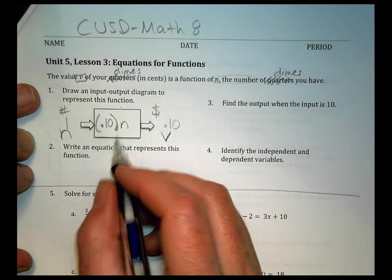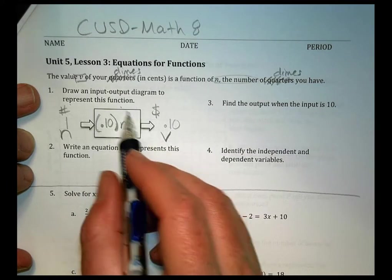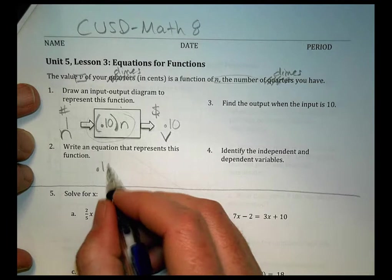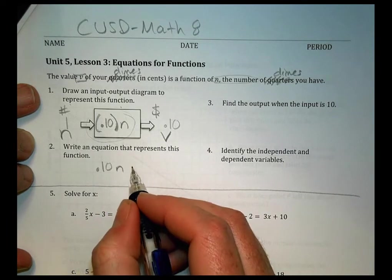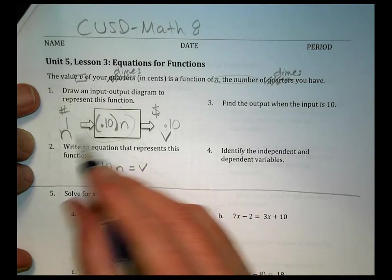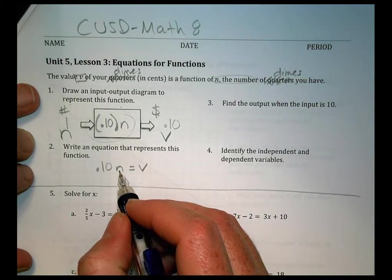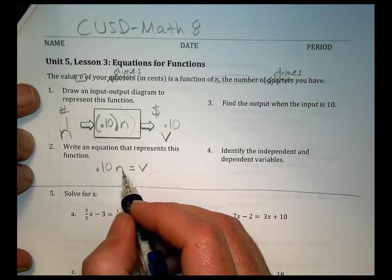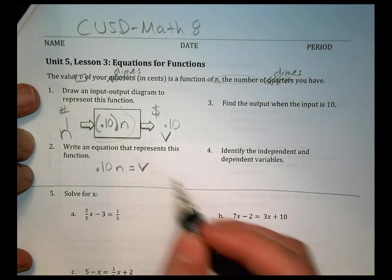As an equation, the way we'd write this here is we'd take this function rule, which is 0.10 times N, and we make that equal to our value. The number of dimes times the value of one dime equals the total value altogether.